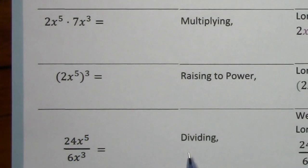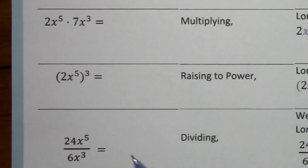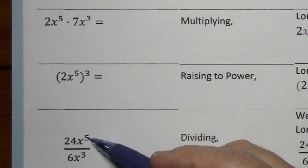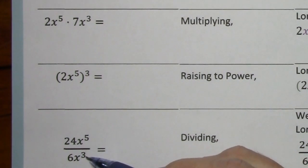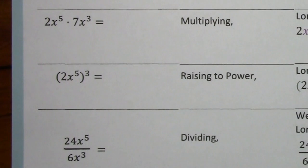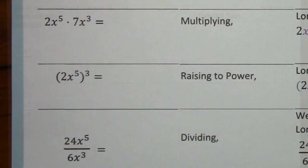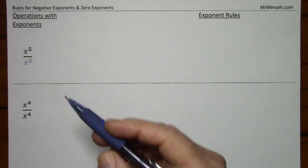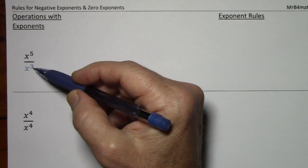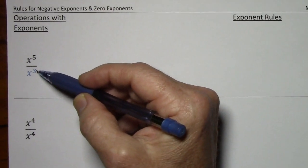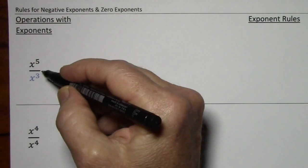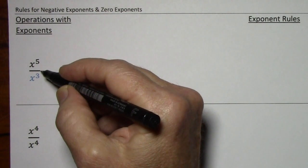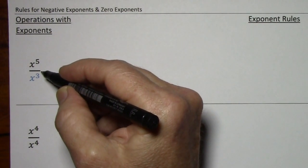I'll start out by looking at our original division problem. In particular, x to the fifth and x to the third — I'm going to ignore these coefficients because they don't concern us for the rule we're developing. So here we have x to the fifth over x to the third, and I'll use this to develop the rule for negative exponents.